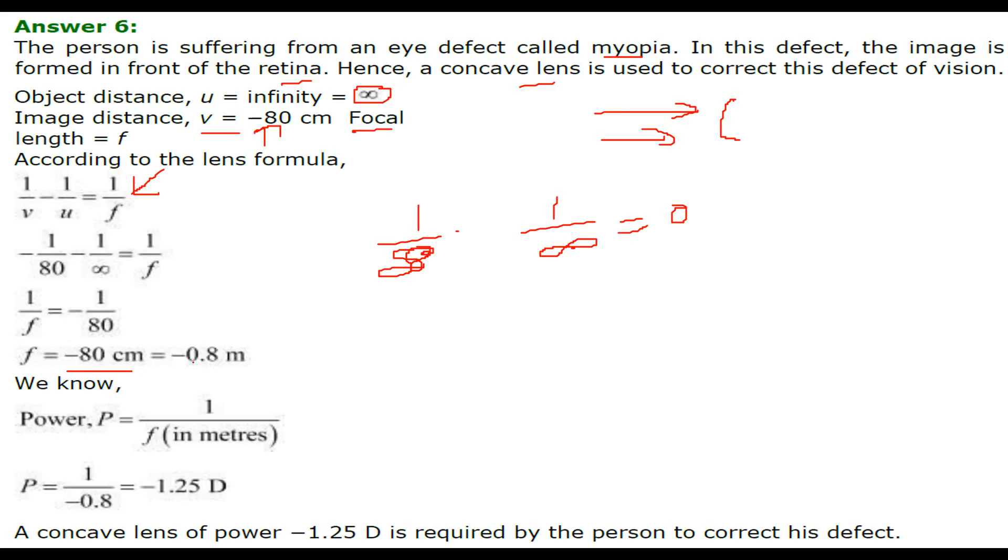You can divide it by 100, so you get it in meter, minus 0.8 meter. And we know that power is equal to 1 by f, focal length. We will take f here. So this will be minus 1.25 diopter. So we will use a concave lens of this much power which is required to correct the problem of the person.